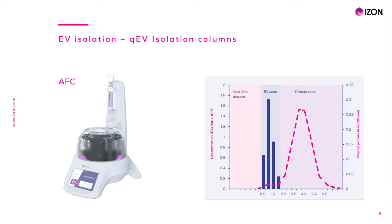QEV columns can be run by the automatic fraction collector AFC, with automated flushing and fraction collection and customizable settings like buffer volume and amount and volume of each fraction. The AFC allows standardization and reproducibility in the EV purification process. Here is an example of a dilution profile in terms of particles and proteins, where EV-rich volumes are separated from the majority of proteins contaminating the sample.